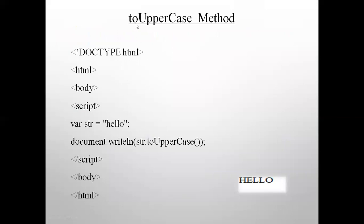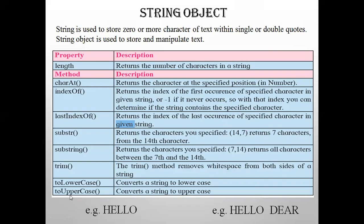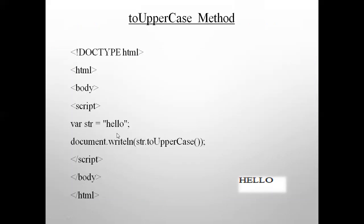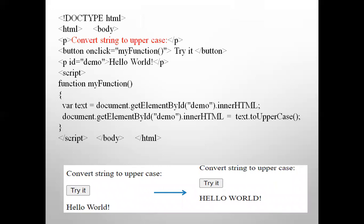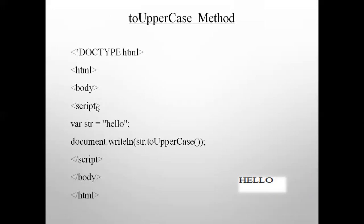Let's take a program for the `toUpperCase()` method. Here we demonstrate: `var str = 'hello'`, then `document.write(string.toUpperCase())`. Note U and C are capital in `toUpperCase` — write it exactly as specified in the table. So if the string is written in small letters, calling `toUpperCase()` and closing the parenthesis will convert it to capital letters as the output.